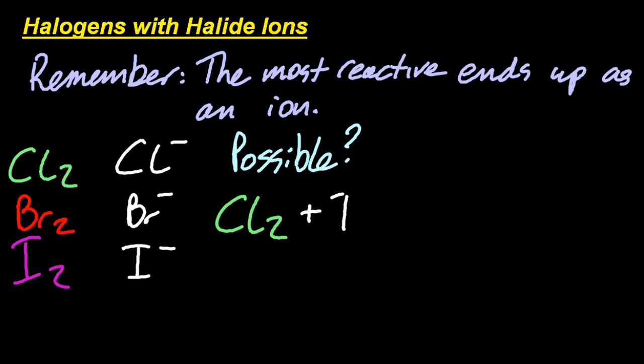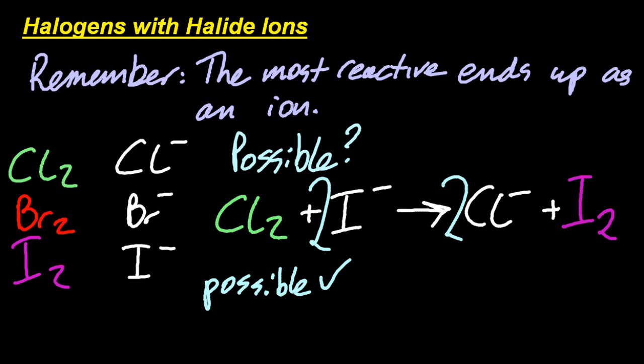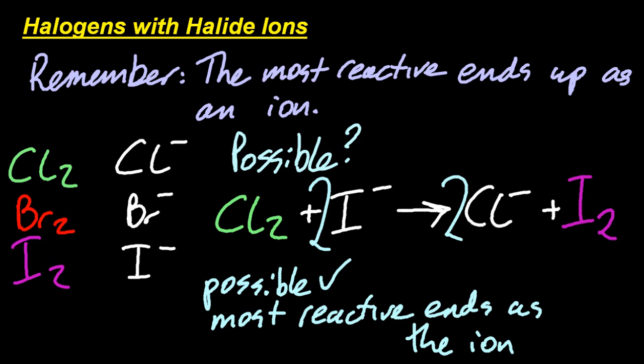And finally, what about this one? Chlorine and iodide. Does that make chloride and iodine? Will it turn from green to purple if I mix all this up? Yeah, that'll work. Chlorine's more reactive than iodine. It's higher in the halogens. So it's possible. Chlorine turns to chloride. The most reactive ends up as an ion.